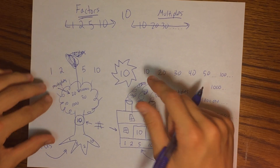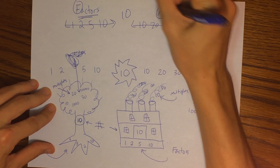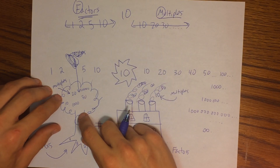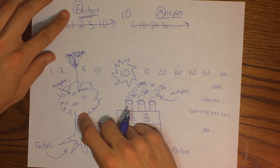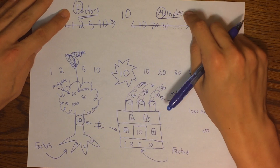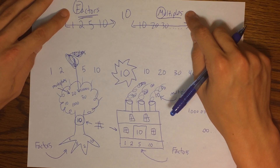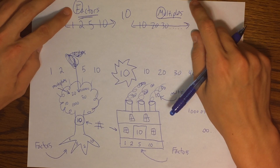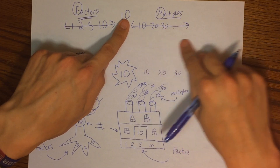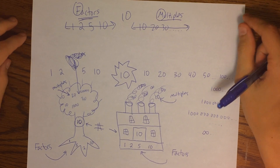Factors starts with an F. Multiples starts with an M. Which letter comes first in the alphabet? F! That's a trick I've always used in school. F comes before M, therefore the factors of a number come before the multiples of a number.